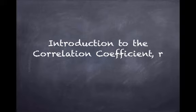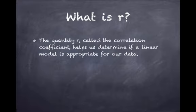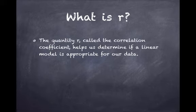What we're going to look at today is an introduction to the correlation coefficient, which we refer to as the variable r. First of all, we want to know what r is. r is a value — a number — and we call it the correlation coefficient. Basically, it helps us determine if a linear model is appropriate for our data. When we have a set of data, we want to see if we can fit a linear model, and r helps us decide if we can.